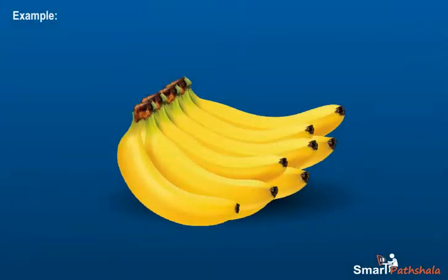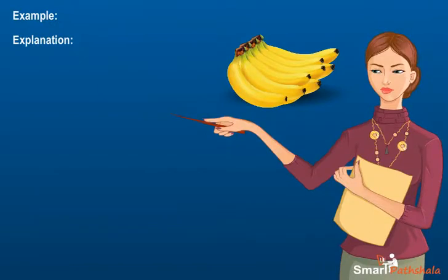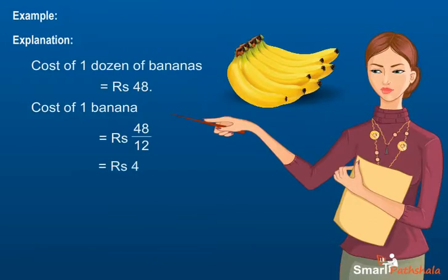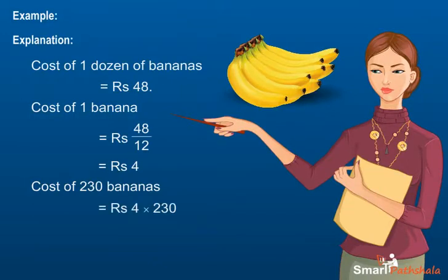Example. The cost of a dozen bananas is Rs. 48. Find the cost of 230 bananas. We have cost of a dozen bananas, i.e., cost of 12 bananas, is Rs. 48. So cost of 1 banana is Rs. 48 divided by 12, which is equal to Rs. 4. Now cost of 230 bananas is Rs. 4 multiplied by 230, which is equal to Rs. 920.